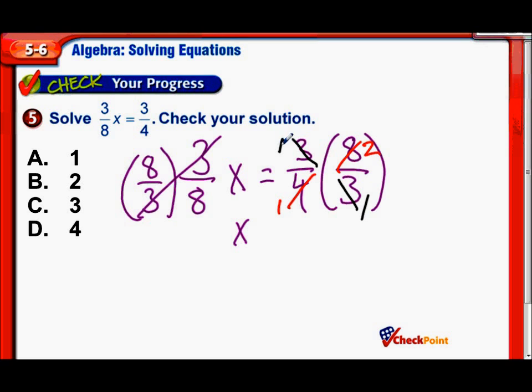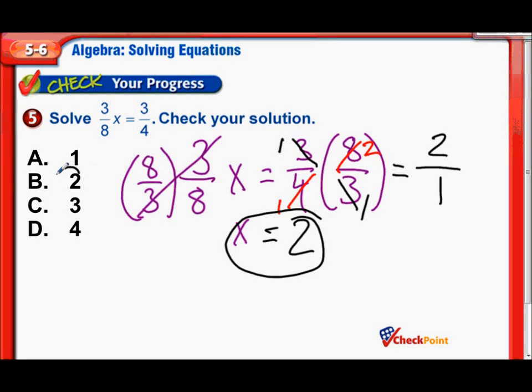Now let's multiply everything together. We have 1 times 2 on top, that's 2. 1 times 1 on the bottom, that's 1. So really that equals 2 over 1. But of course 2 divided by 1 is simply 2. So it turns out 3/8 times 2 equals 3/4.